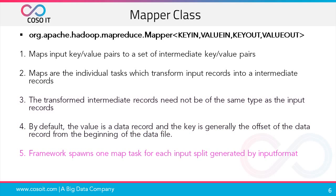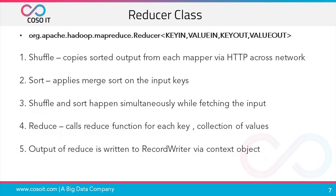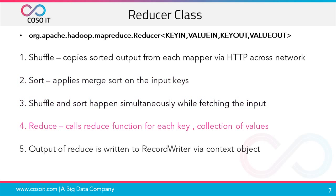The framework spawns one map task for each input split generated by input format. Before the reduce phase begins, there is a process called shuffle sort that takes place. MapReduce makes the guarantee that the input to every reducer is sorted by key. The process by which the system performs the sort and transfers the map outputs to the reducers as inputs is known as shuffle. It also extends the class from package org.apache.hadoop.mapReduce. Shuffle copies sorted output from each mapper through HTTP across the network, and sort applies merge sort on the input keys. This shuffle and sorting happens simultaneously while fetching the input. The reducer class reduce function is called for each key and collection of values, and the output of reduce is written to a record writer via the context object.